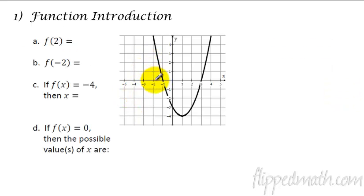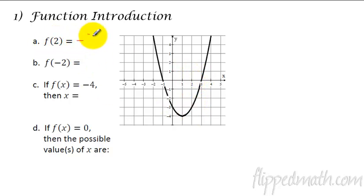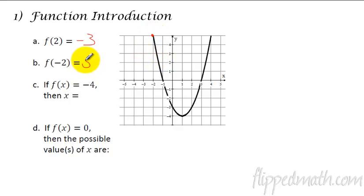What about looking at this here? If we were trying to find out these values — this means the x value is a 2, so that would be a negative 3. In this case, the x value is a negative 2. And that case, we're way up here at 5. We're up there at 5.